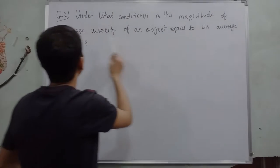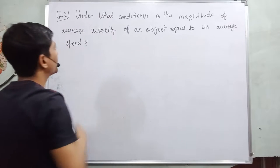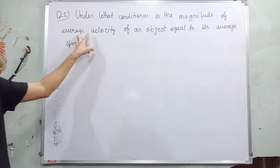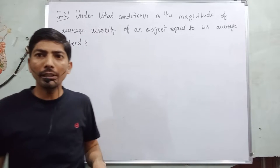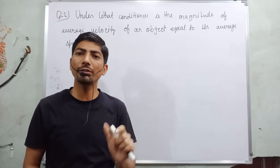Under what conditions is the magnitude of average velocity of an object equal to its average speed? In this question we need to find out in which condition the average velocity and average speed are equal. It is possible only when an object moves in one direction.